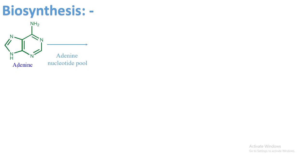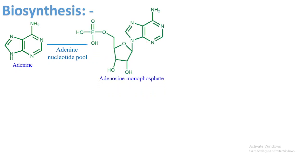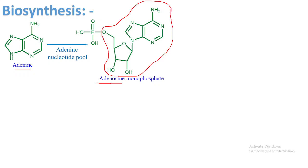Adenine enters the adenine nucleotide pool and gets converted into adenosine monophosphate. The difference between adenine and adenosine monophosphate: adenosine monophosphate contains the adenine ring, a ribose sugar, and a phosphate group. Adenine plus ribose sugar equals adenosine, and with the extra phosphate group it becomes adenosine monophosphate (AMP).